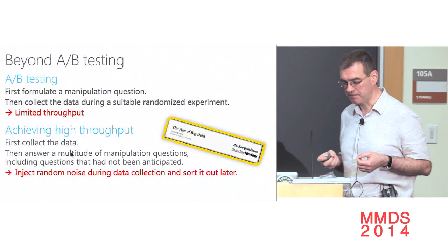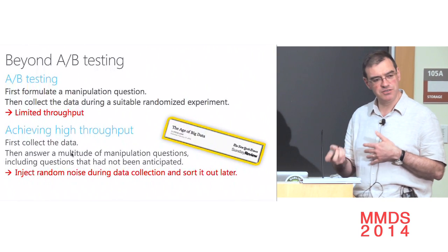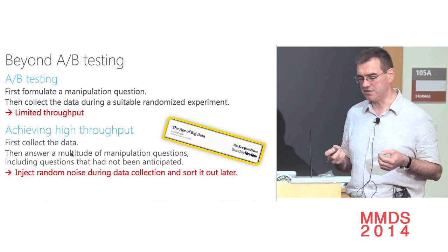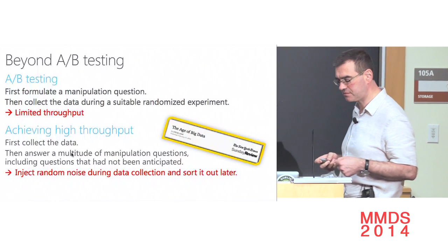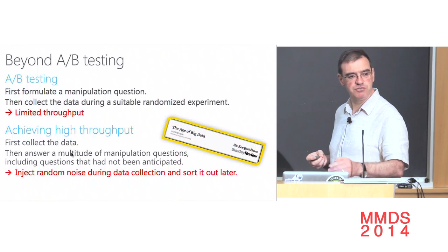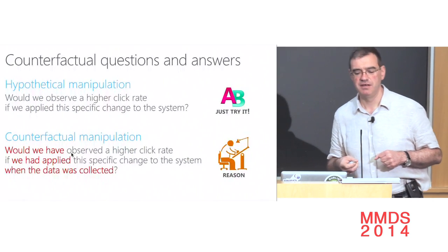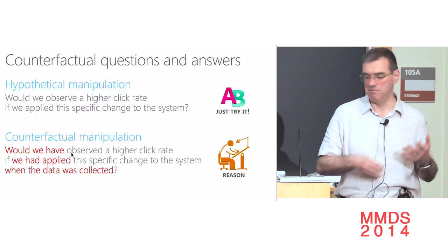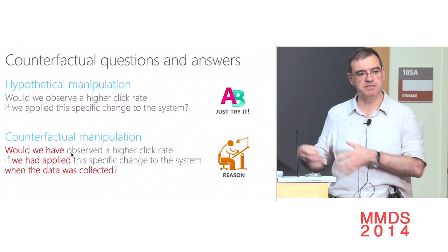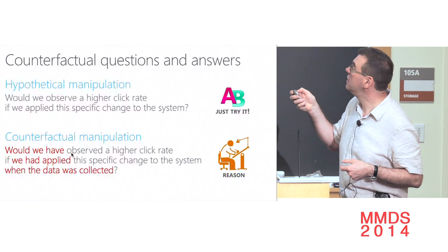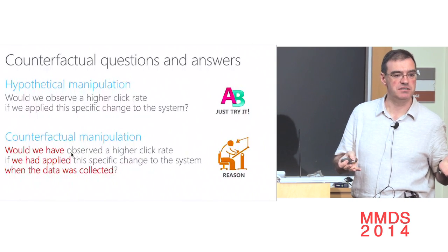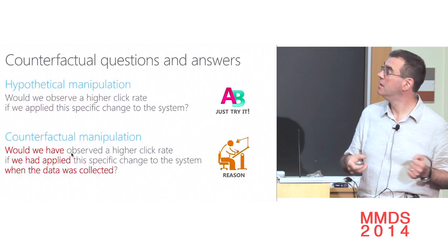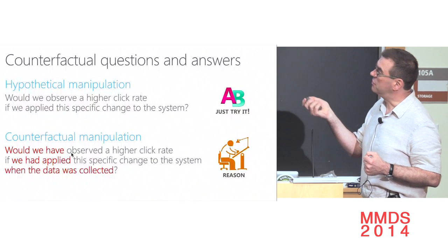We want high throughput: collect the data first and then answer a multitude of manipulation questions, including questions that were not anticipated beforehand. The solution is to inject some randomness during data collection and sort it out later in the proper way — requiring a lot of modeling and inference techniques. The contrast between these two methods is the contrast between two kinds of questions: the conditional — 'what happens if we do this?' — and the counterfactual — 'what would we have observed if we had applied this specific change when the data was collected?'